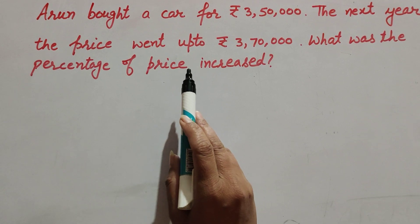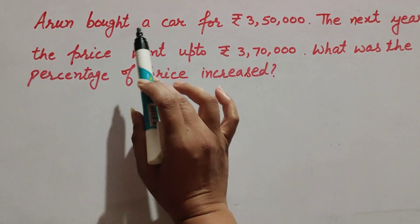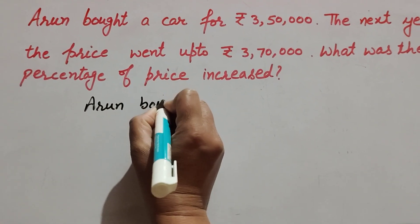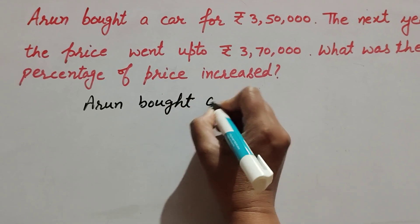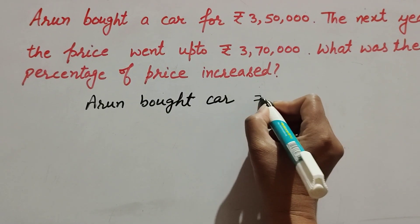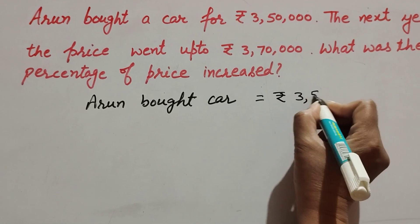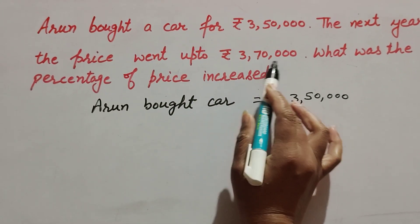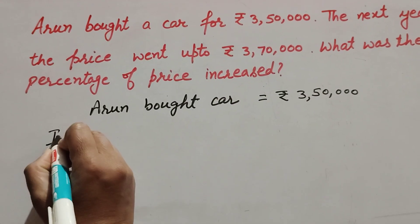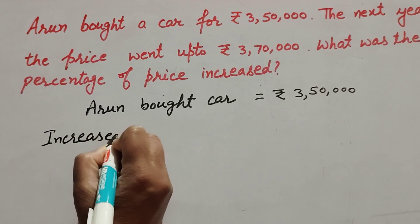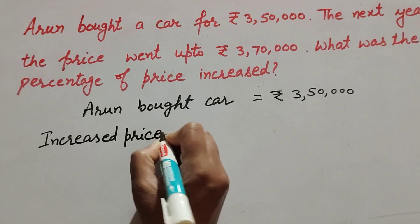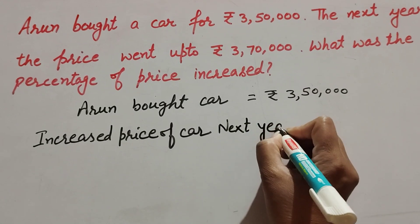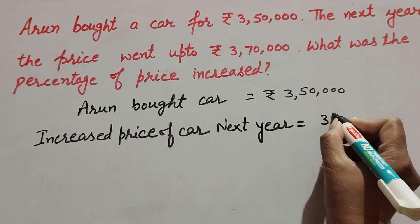In this question we find the percentage increase in the price of the car. Arun bought the car for rupees 3 lakh 50,000 — this is the initial price of the car. The increased price of the car in the next year is equal to 3 lakh 70,000.